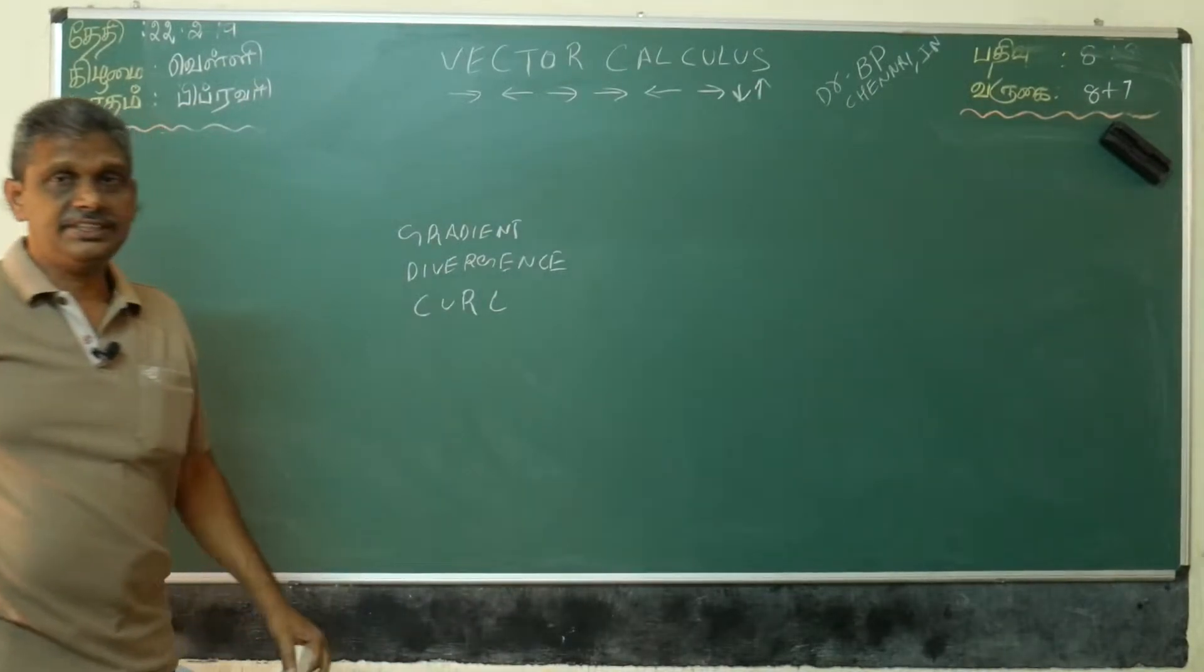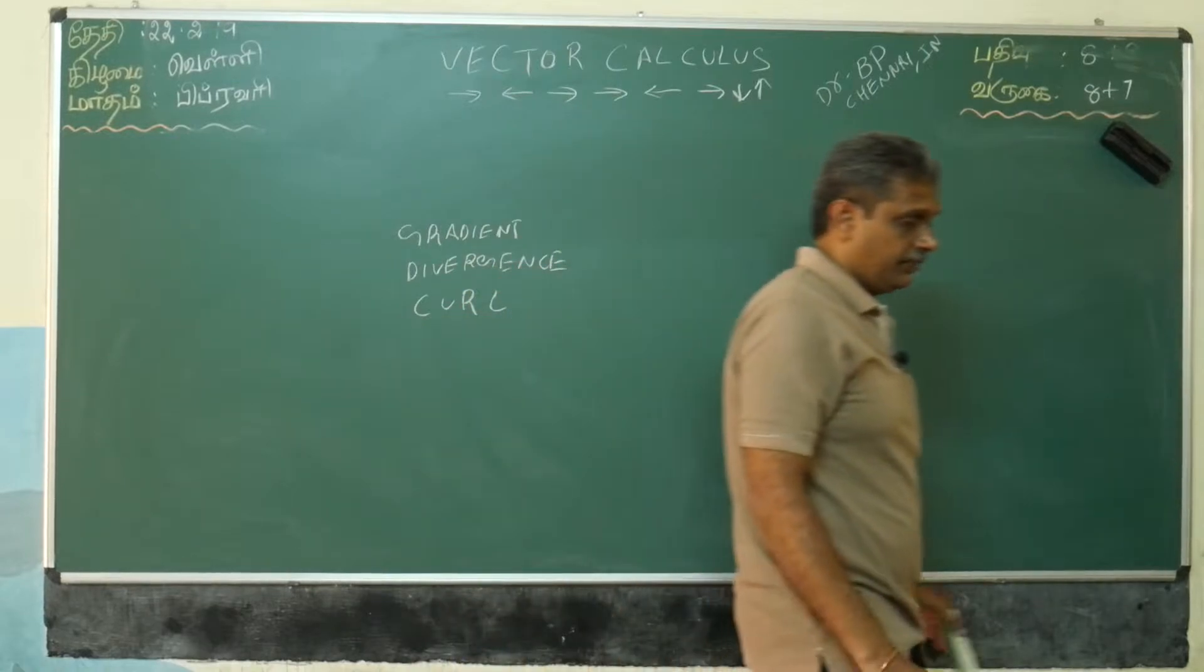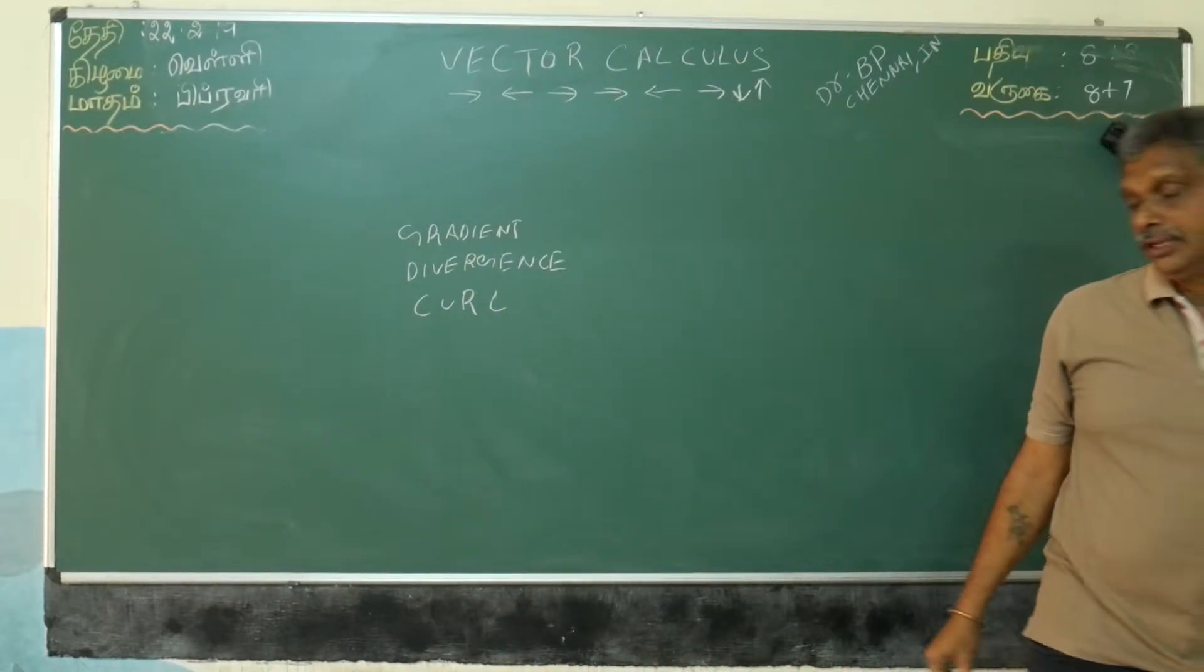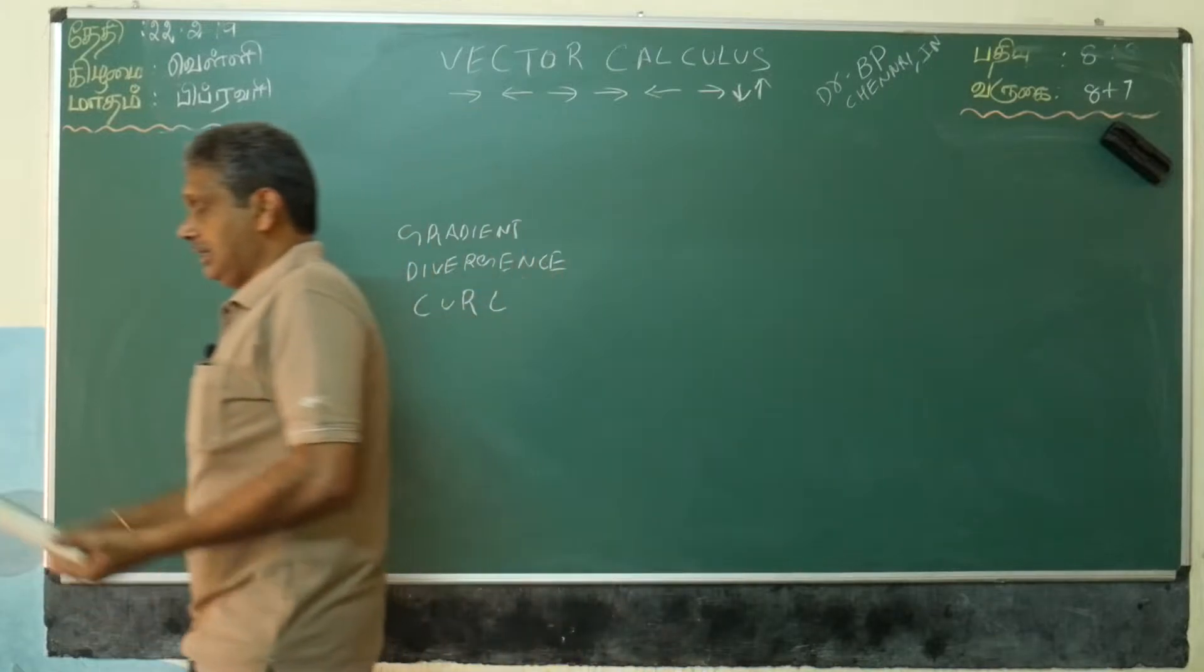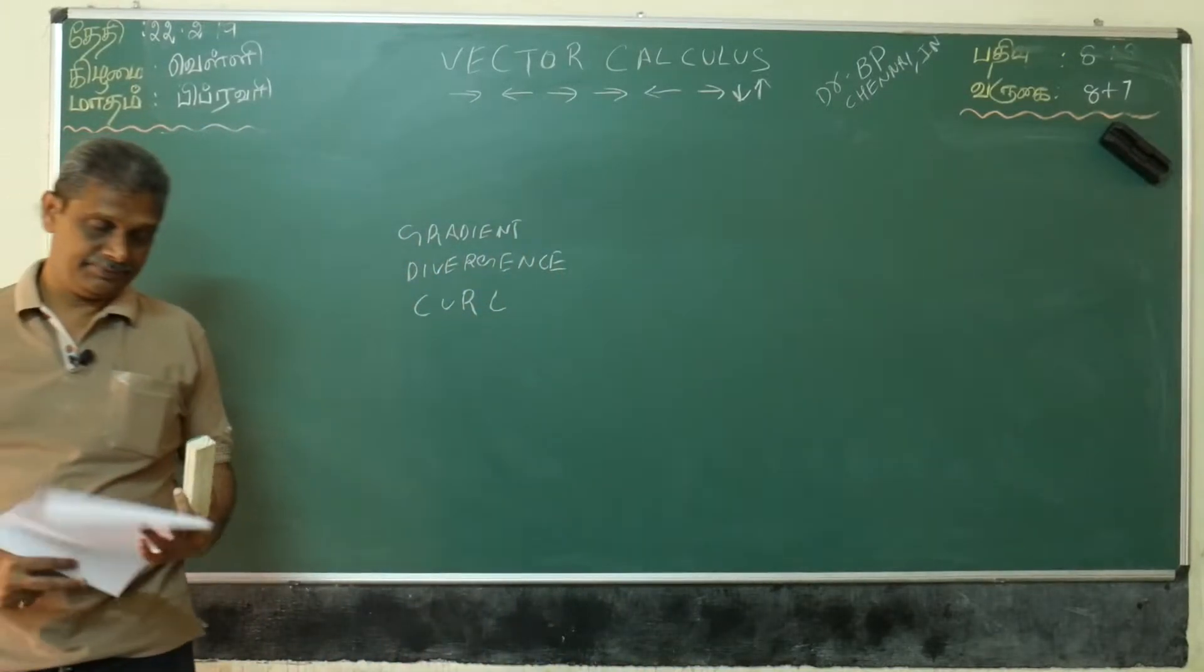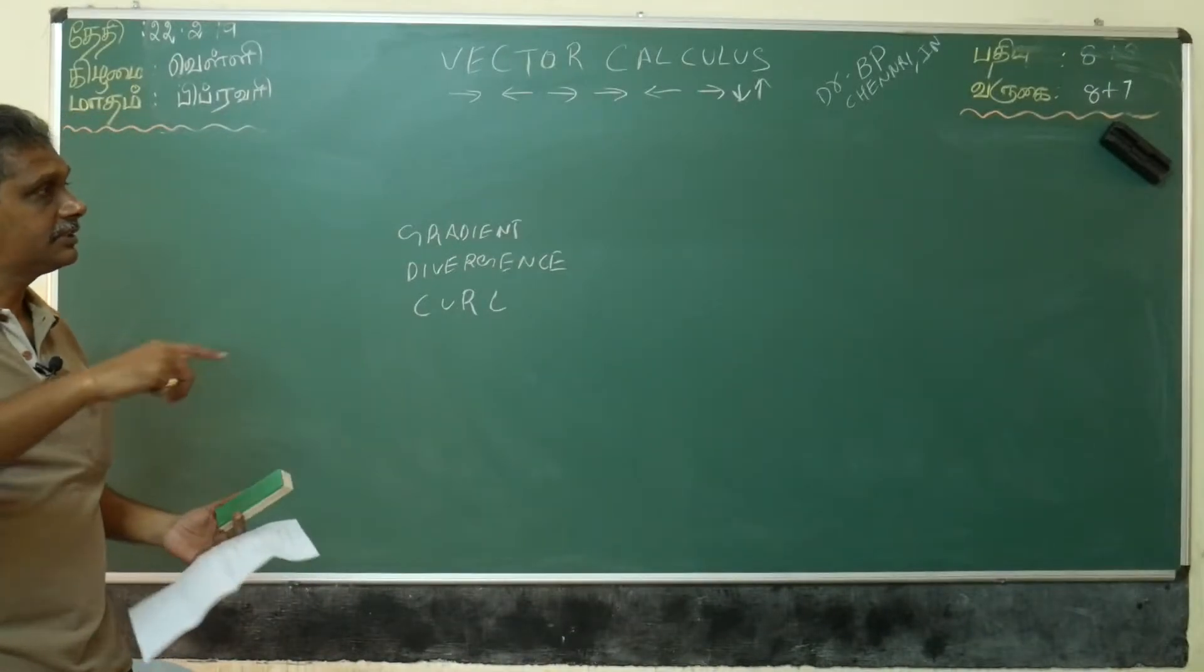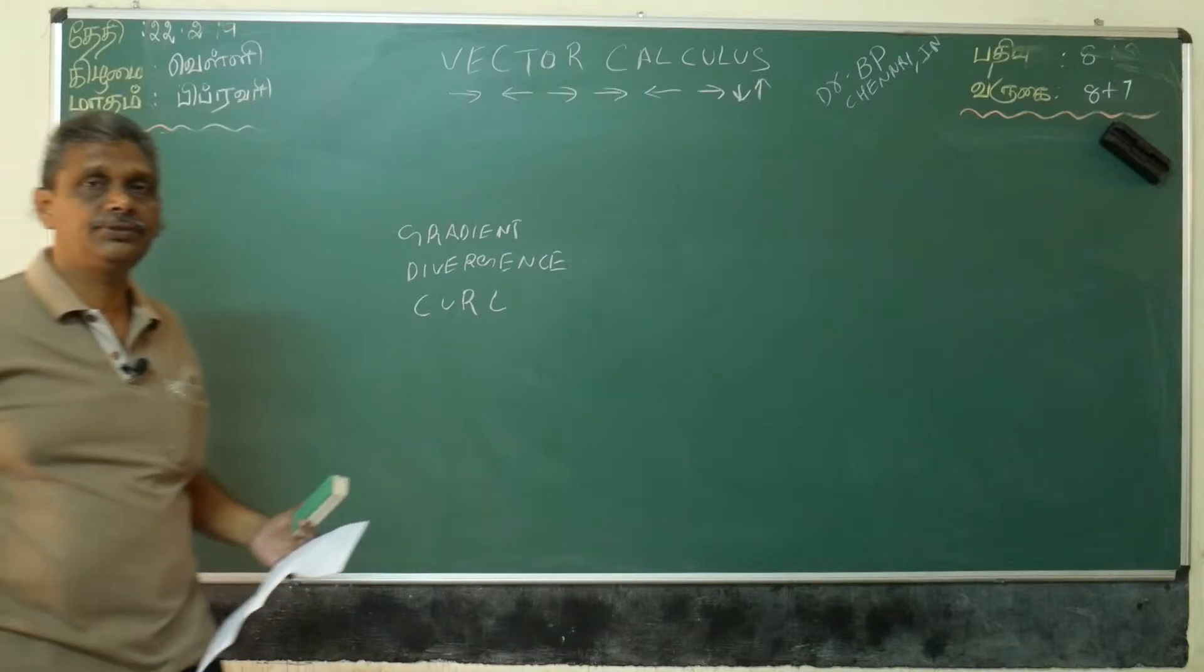As the physical meaning of gradient, divergence, curl: gradient means what? This is the measure of the rate of direction change in the scalar field. Gradient is surface normal. That I will explain when doing the problem. I will give examples.